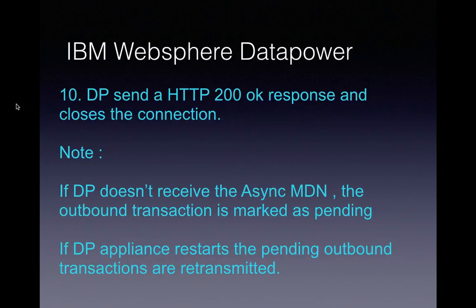This completes the whole asynchronous outbound flow cycle. If DataPower does not receive the async MDN, the outbound transaction is marked as pending — not complete. In case DataPower restarts due to some issues, the pending outbound transactions are retransmitted back to the external partners. We will see how a B2B async inbound flow works in the next video. Thanks for watching.